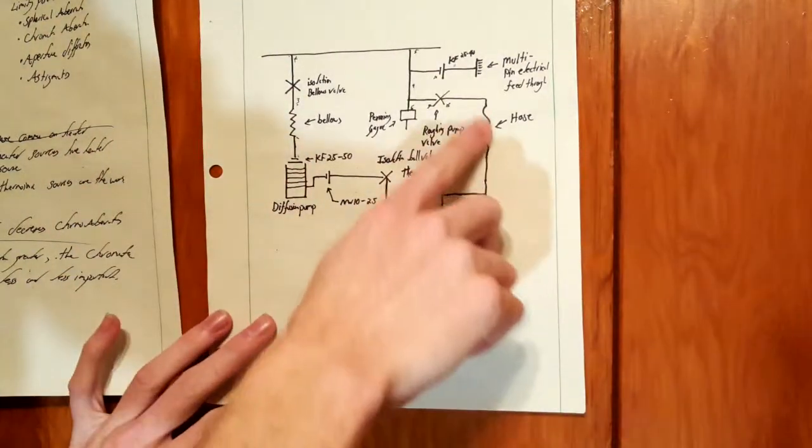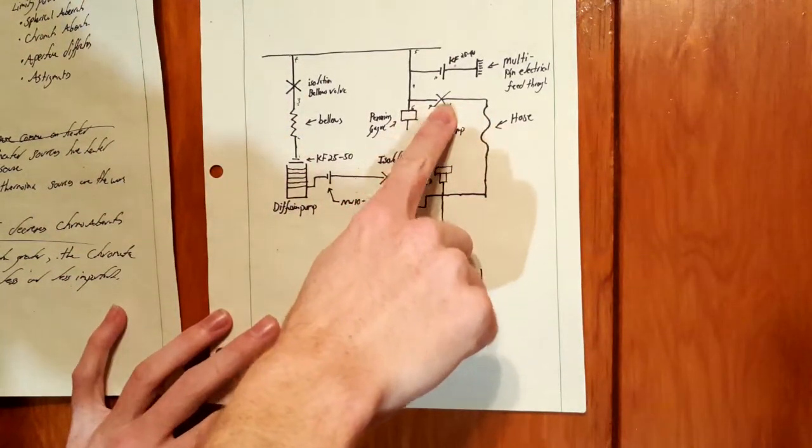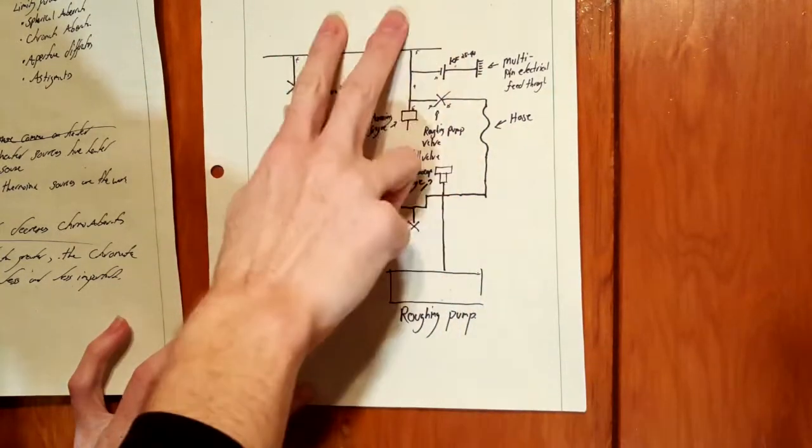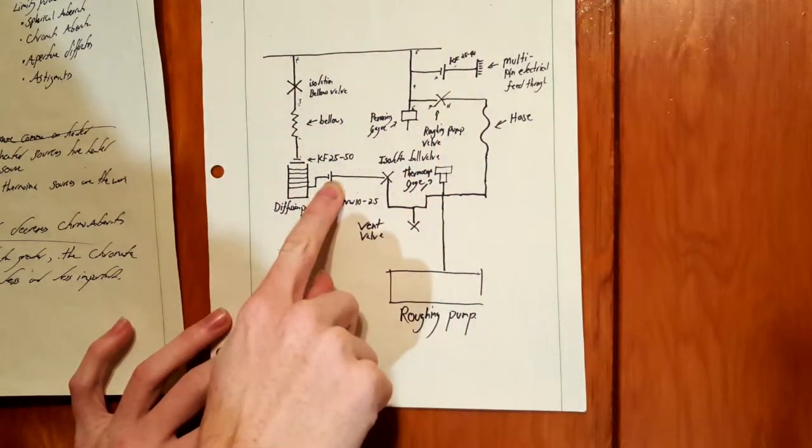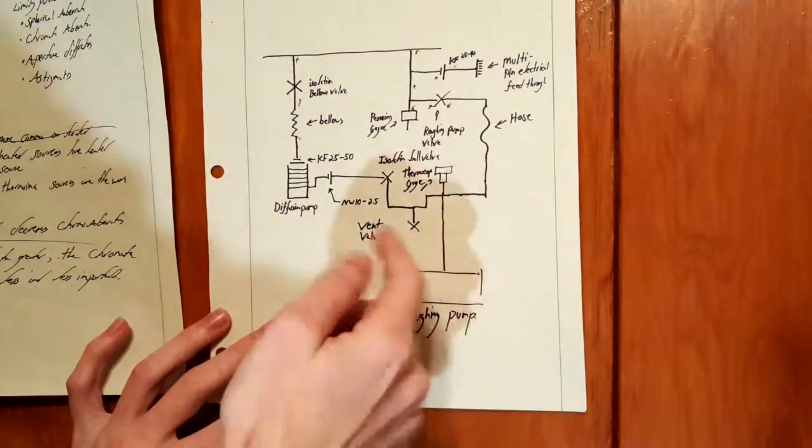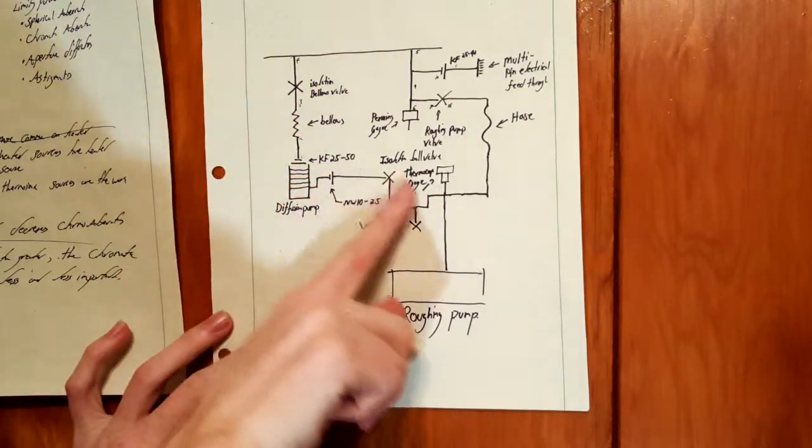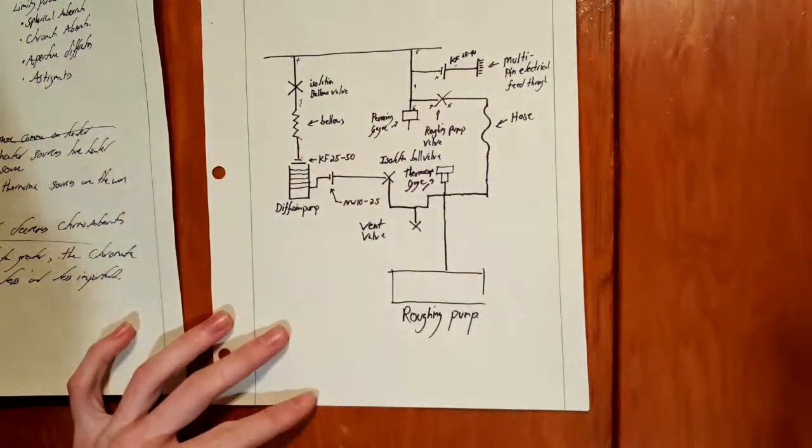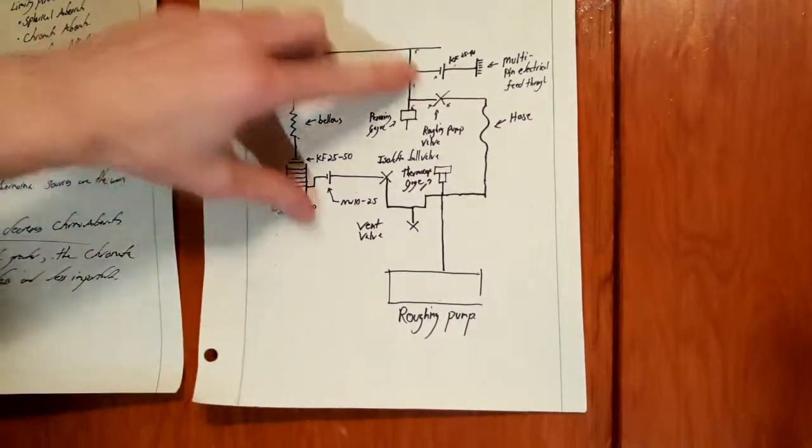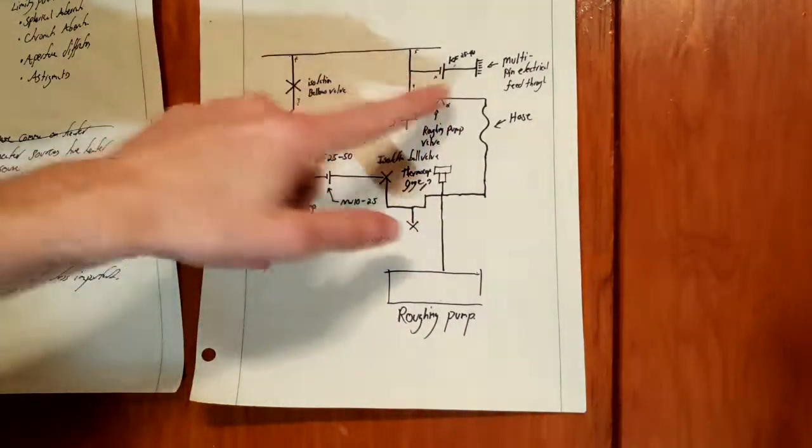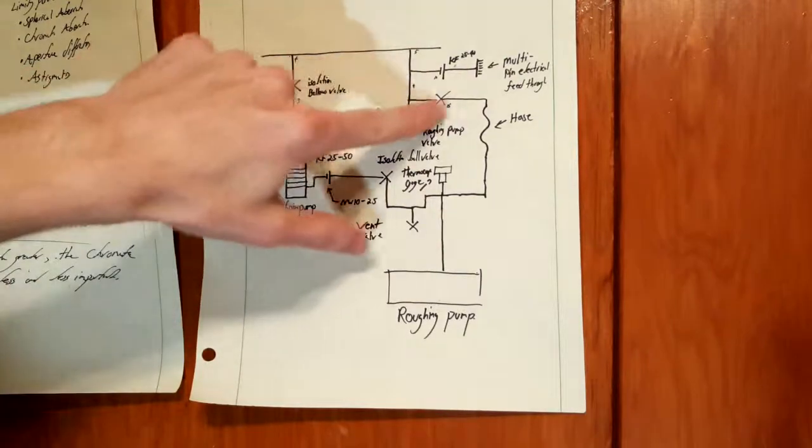On the other side here we also have a roughing pump valve. This is necessary because I want to pump down the chamber, then open up the diffusion pump. For the diffusion pump to work, air must be flowing down it and through it to actually pull out the air which the diffusion pump knocks down. I want all the flow to be going through here and not through this side, so I can close off this valve system.